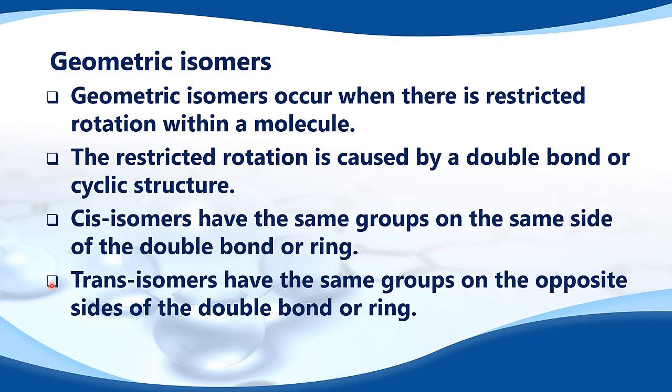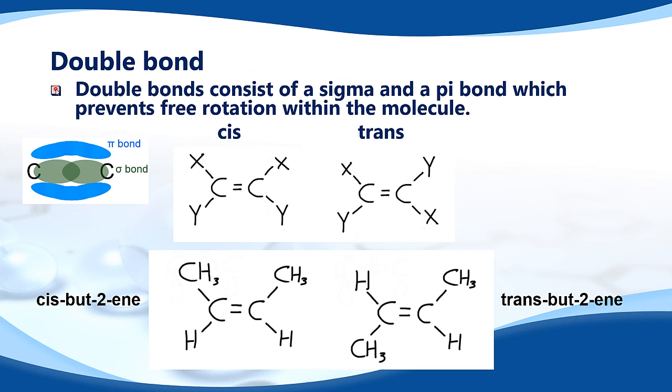Trans isomers have the same groups on the opposite sides of the double bond or ring. Double bonds consist of a sigma and a pi bond which prevents free rotation within the molecule.